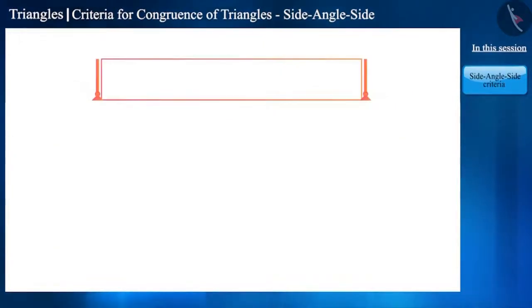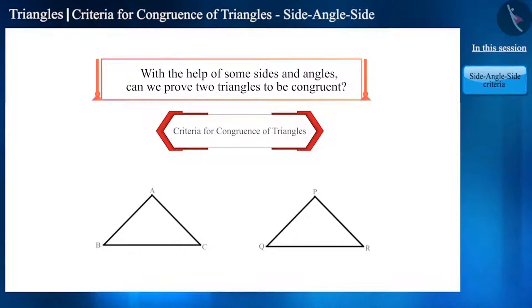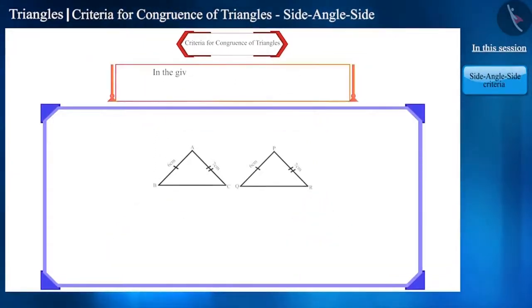But, with the help of some sides and angles, can we prove two triangles to be congruent? In this video and in the upcoming video, we will see at least how many sides or angles must be equal for two triangles to be congruent.